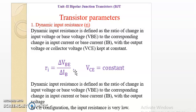Dynamic input resistance is defined as the ratio of change in input voltage or base voltage to the corresponding change in input current, that is base current, with constant output voltage. In common emitter configuration, the input resistance is very low, because base current is more and VBE is less.